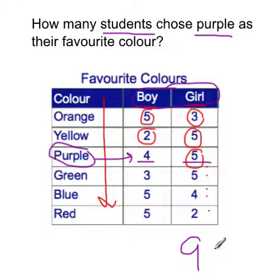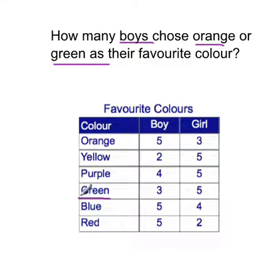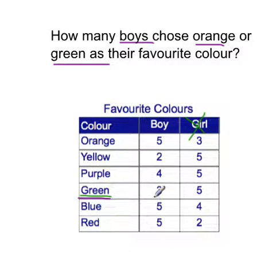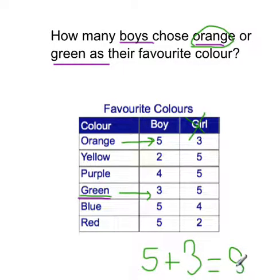Four plus five is nine, so there are nine students who chose purple as their favourite colour. Now let's look at this question: how many boys chose orange and green as their favourite colour? We've got green over here, and we want to look at the boys column — so let's forget the girls. Pause the video and see if you know this answer. Looking down the boy column, for green there's three, and for orange there's five. So five plus three equals eight. If you got eight, that is correct.